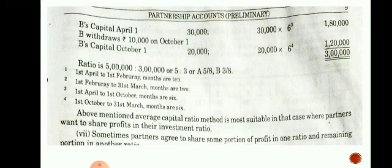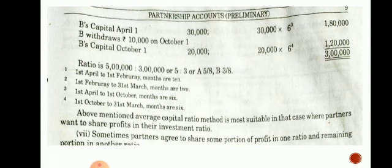So the ratio of A and B: A has 5 lakhs and B has 3 lakhs, so the ratio is 5:3. This is the average capital ratio method. This method is most suitable in cases where partners want to share profit in their investment ratio. Sometimes partners agree to share some portion of the profit in one ratio and the remaining portion in another ratio, based on their investment.